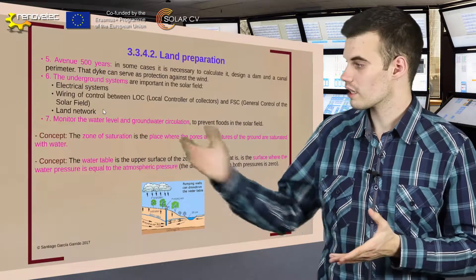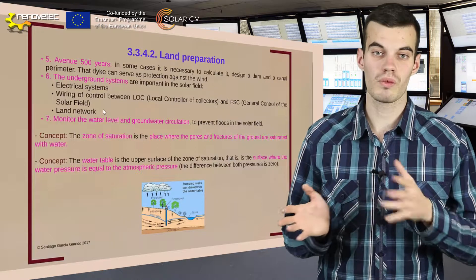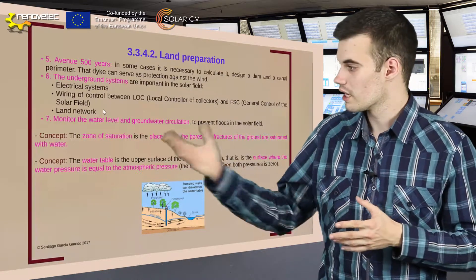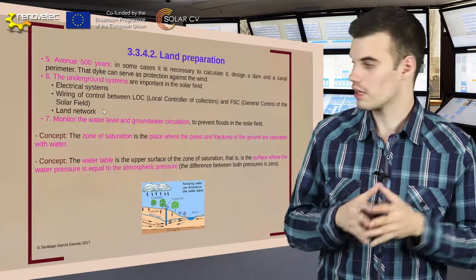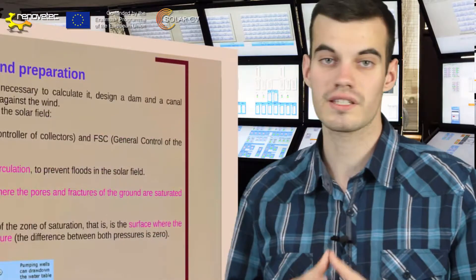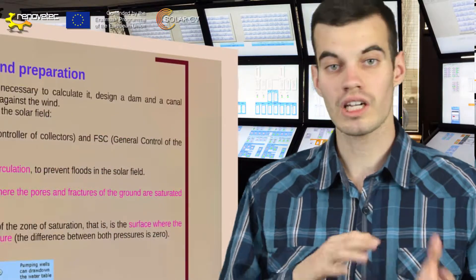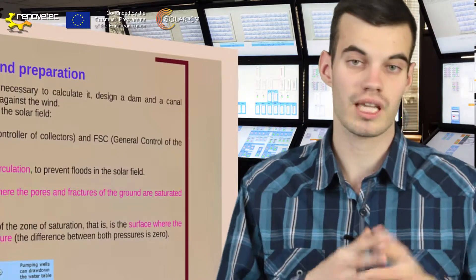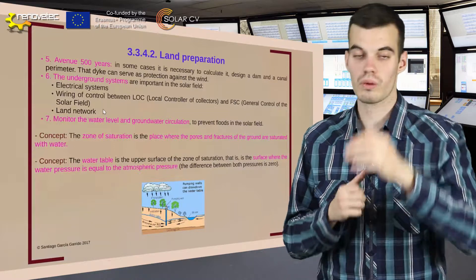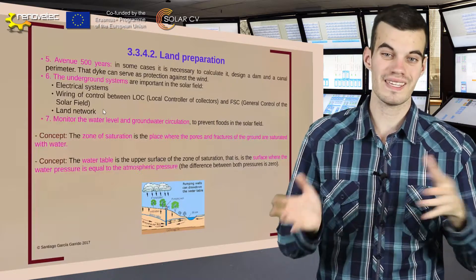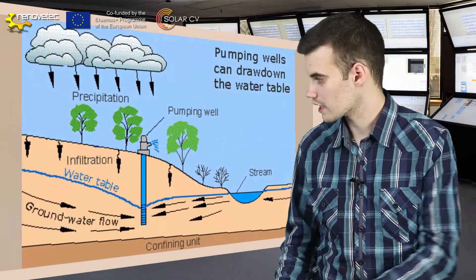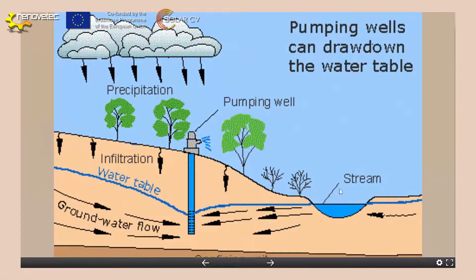The last parameter in land preparation is the number of sensors to monitor the water level and groundwater circulation. We must understand two concepts: the zone of saturation and the water table or water level. The zone of saturation is the place where the pores and fractures of the ground are saturated with water. The water table is the upper surface of the zone of saturation which is in contact with the atmosphere, so both atmospheric pressure and water table pressure are going to be the same — here we can see the water level is in contact with the atmosphere, so both pressures are going to be one bar.